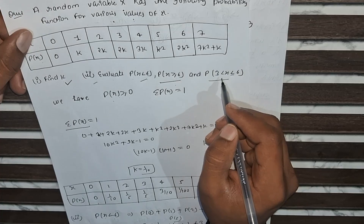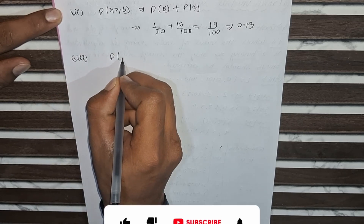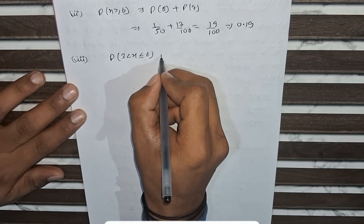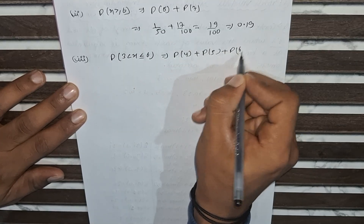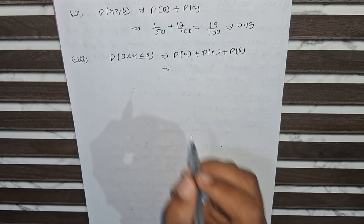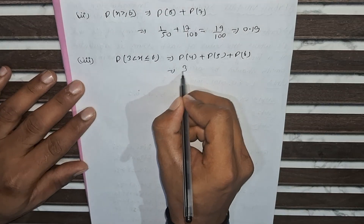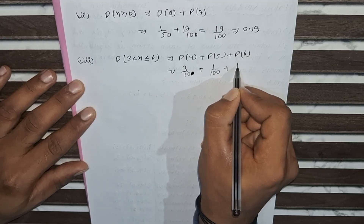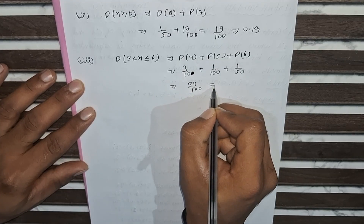Now for the third part: P(3 < X ≤ 6). We include only x = 4, 5, and 6. P(4) = 3/10, P(5) = 1/100, P(6) = 1/50. So 3/10 + 1/100 + 1/50 = 33/100 = 0.33. This is our final answer.